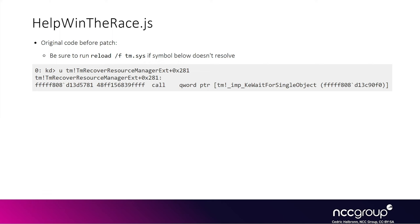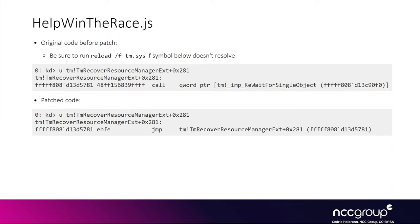We provide a helper script called helpWinTheRace.js, which basically allows patching some code. It will patch the call to KEWaitForSingleObject instruction to help us win the race. Remember, in the vulnerable function, there is a function call to set a notification. Then this function returns and there is a check on the KEEnlistment flag to check if it is finalized. After that, it dereferences the KEEnlistment reference count and calls KEWaitForSingleObject on the resource manager Mutex. That's on this KEWaitForSingleObject that we want to patch memory.